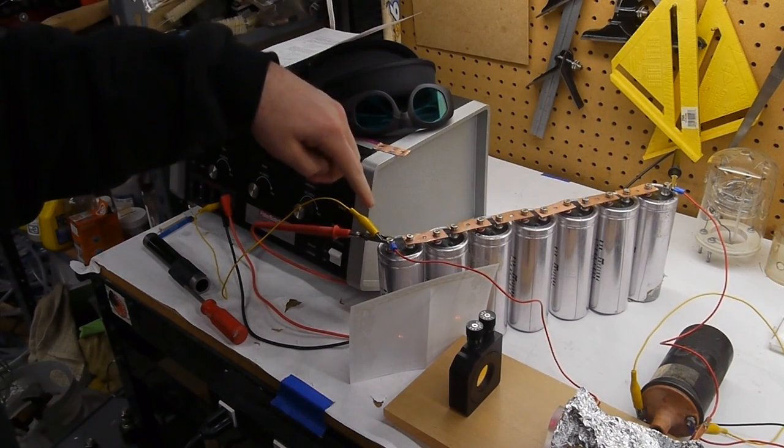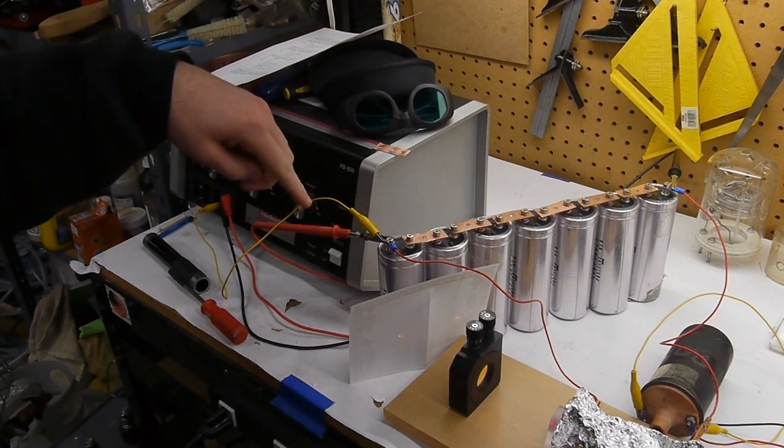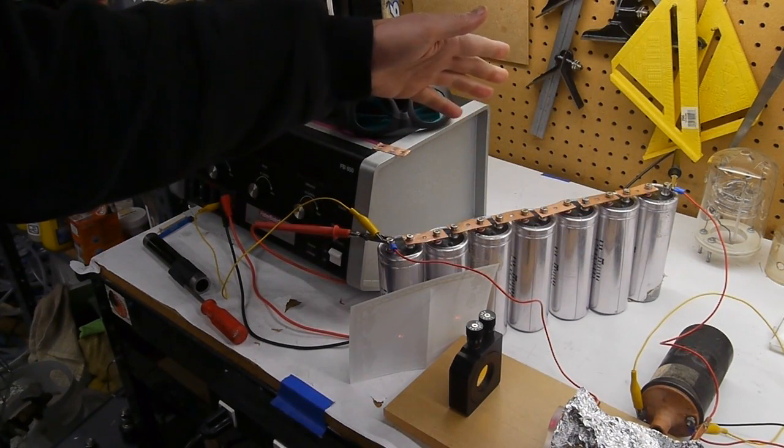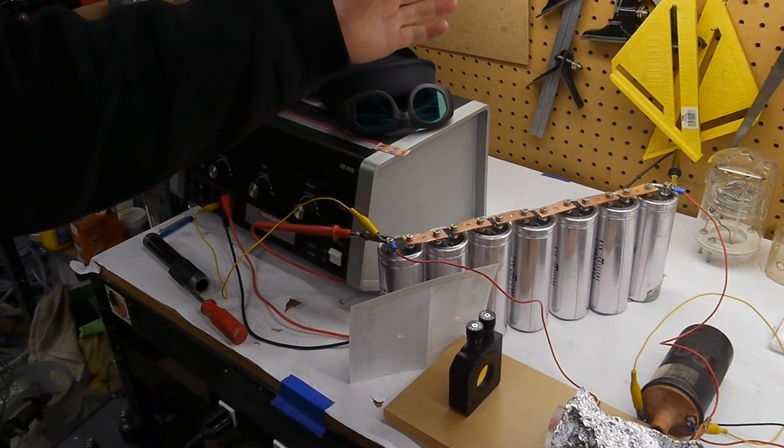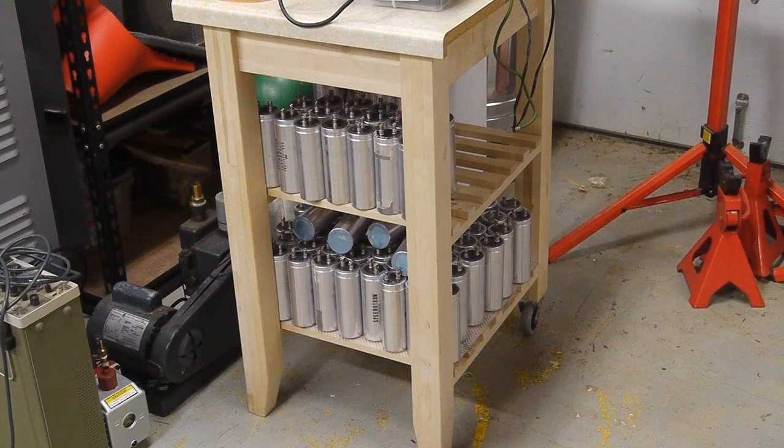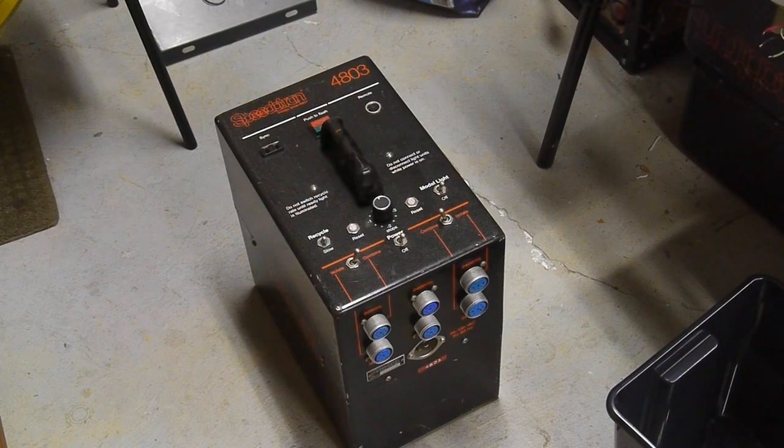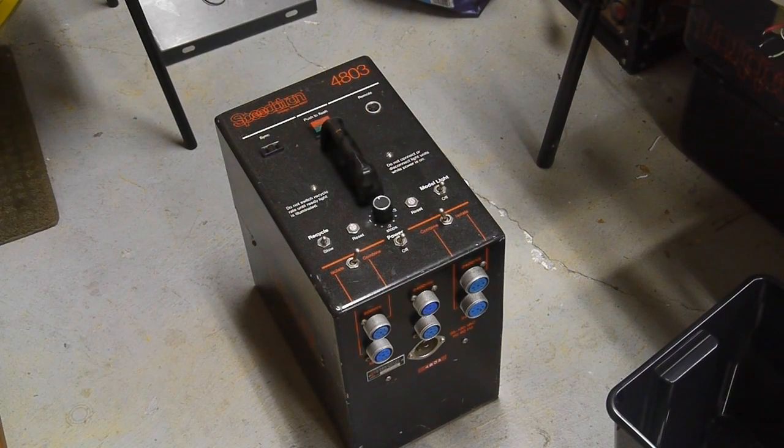Currently this is only about a tenth of my total bank capacitance. This is maybe 600 joules of energy storage here. And the rest of the bank includes way more of these capacitors to bring it up to a total of about 6.5 kilojoules. And then I have another 4.8 kilojoules of caps that I haven't taken out of this professional photography unit.